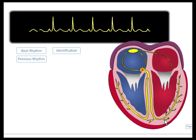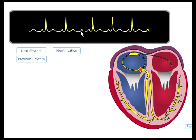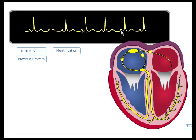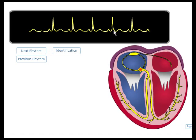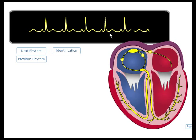In this first rhythm, we have a regular rhythm with a P wave in front of every QRS. The PR interval is constant with normal width, and the QRS is narrow. The rate is about 65 to 70.